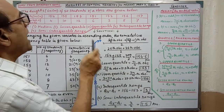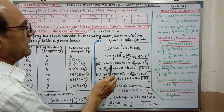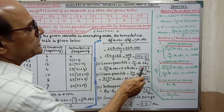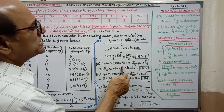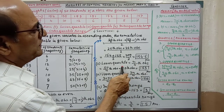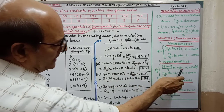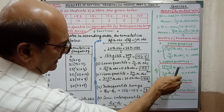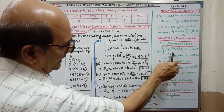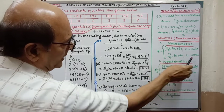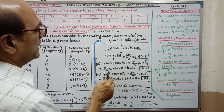Now we have to find out the lower quartile. Since n=50 is even, the formula for Q1 is the n/4 th observation. After writing the formula, we put in the value.